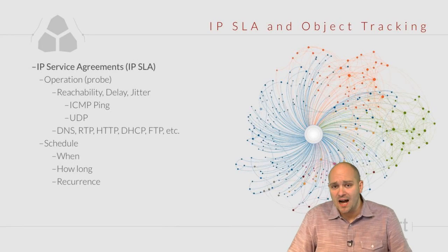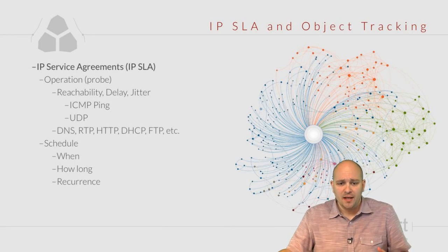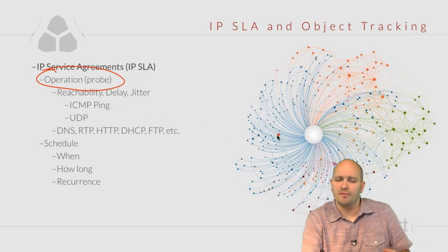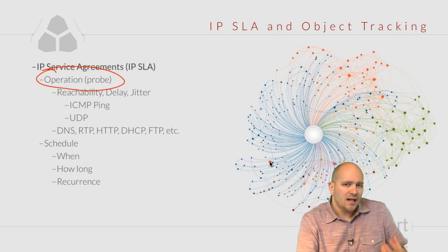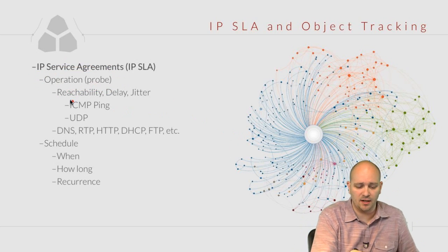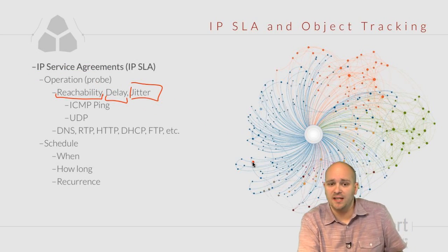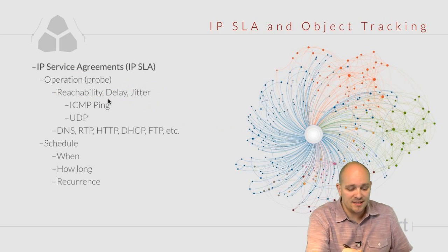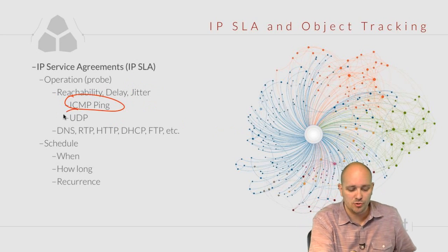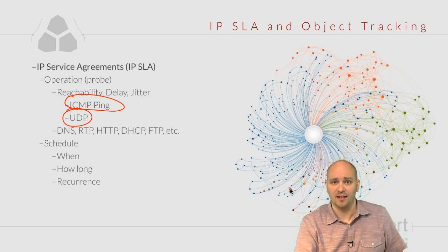IP SLA operations consist of two parts. The first part is the actual operation, sometimes referred to as a probe — what kind of test are we going to be performing in our network? This can be things like reachability tests, measurement of delay, or delay variation which is called jitter, and this can be measured using ICMP ping, ICMP echo packets, or dedicated UDP-generated traffic.